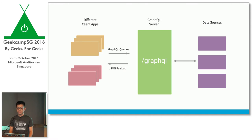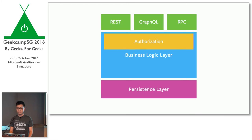A GraphQL server is just like a REST server or an RPC server — it accepts GraphQL queries from clients and returns a JSON payload. Behind the scenes, the GraphQL service can be talking to multiple data sources, completely abstracted away from the clients. It occupies the same space as REST and RPC — it's a view for your underlying business domain.